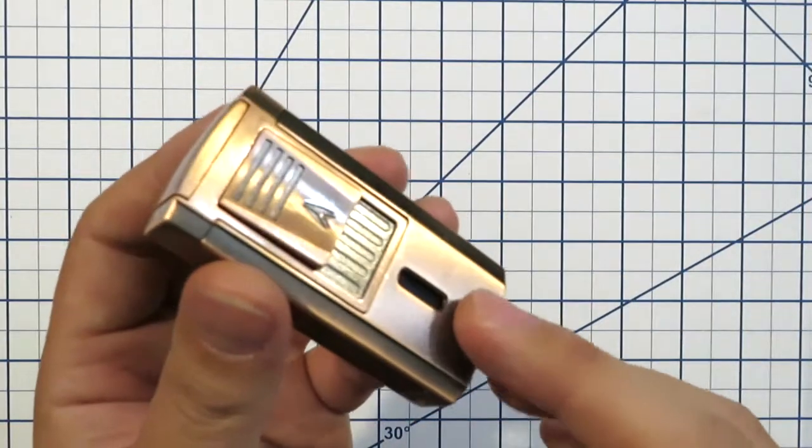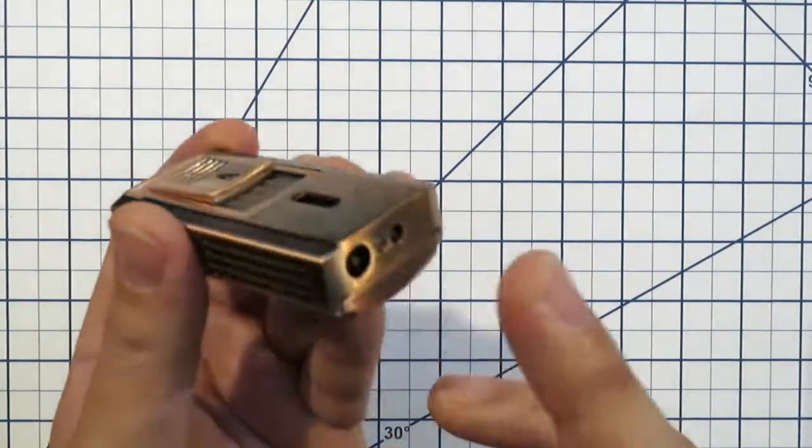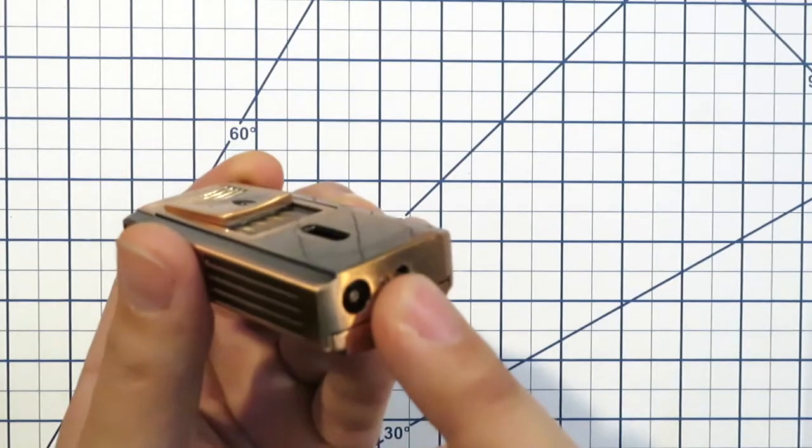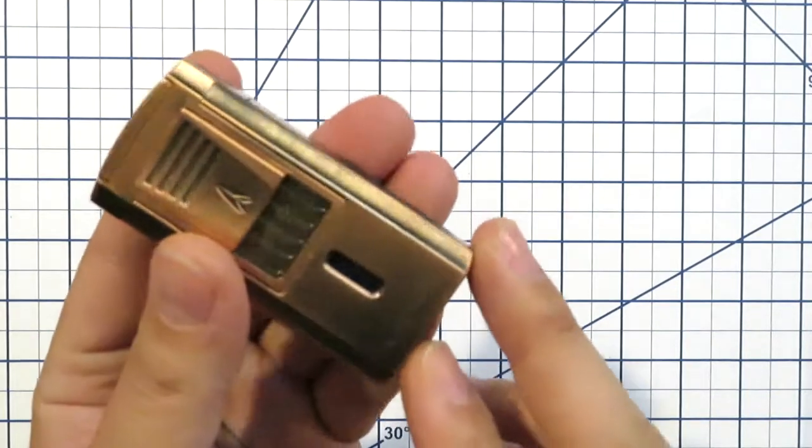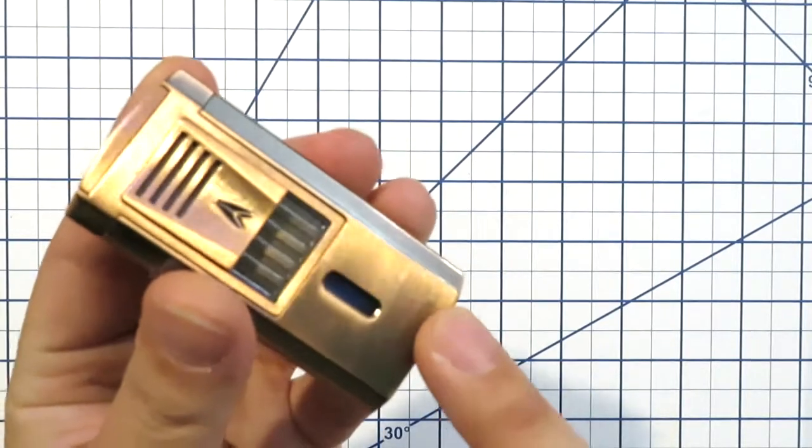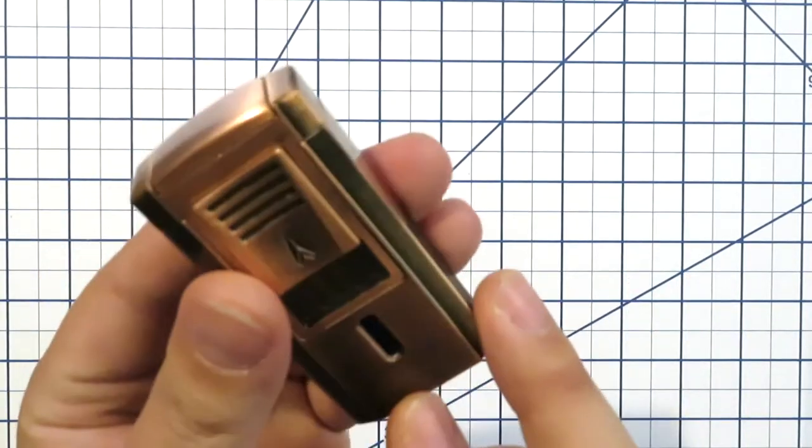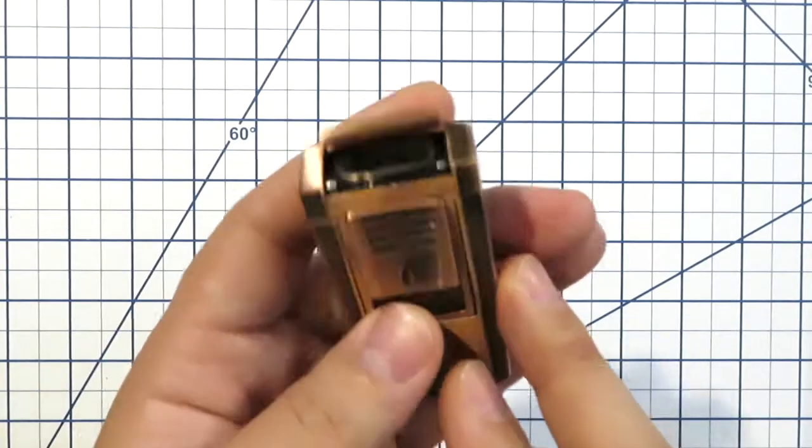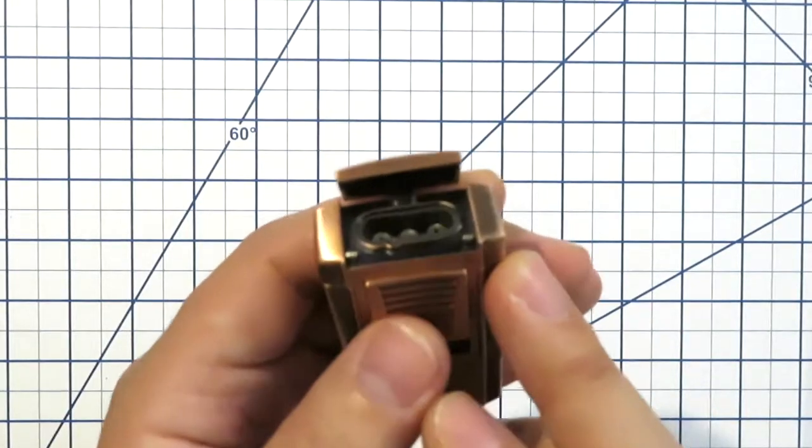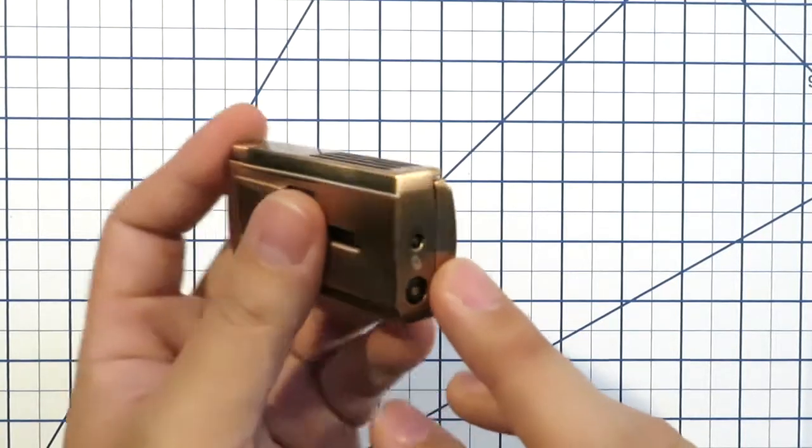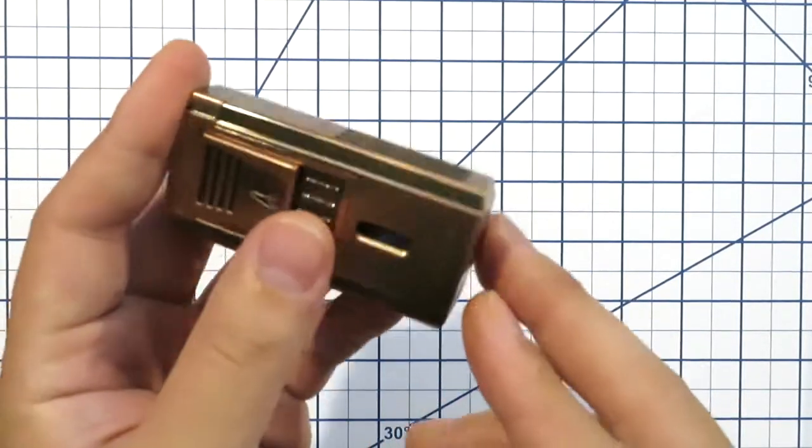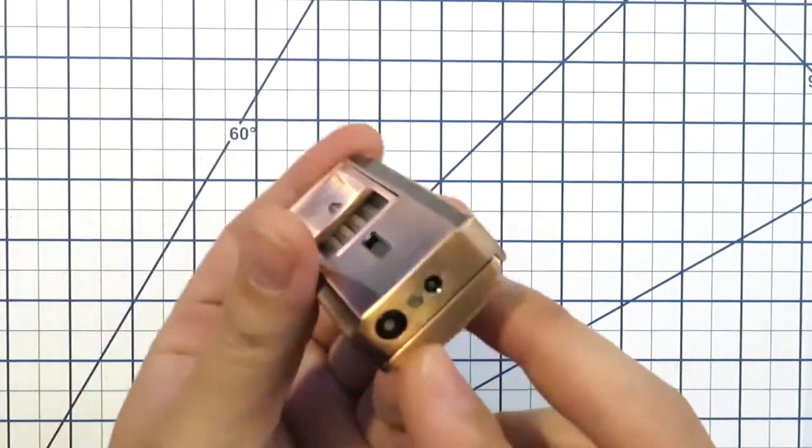Unlike some lighters out there, regardless of how much fuel you have, your setting will still output the same flame height or intensity, no matter how much fuel is in there, until it's completely depleted. This lighter though, as you light and as you use fuel, you'll definitely have to modify or play with that flame adjuster.